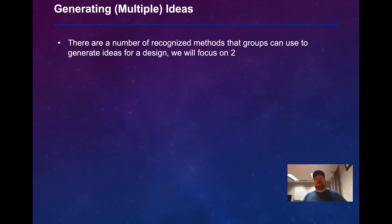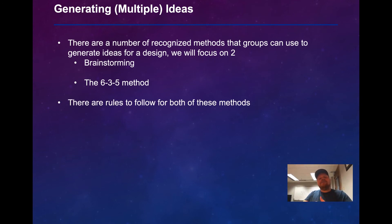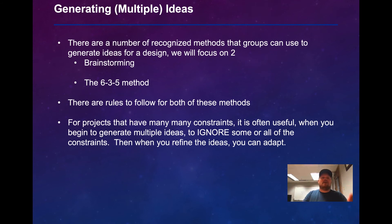The next part of the design process we'll talk about today is generating ideas. There are a number of recognized methods for groups to generate ideas for a design — we're going to focus on exactly two: brainstorming and the 6-3-5 method. In each of these methods, there are specific rules to follow. For projects with many constraints, it's often useful when you begin to ignore some or all of those constraints to give you more options, then adapt based on constraints when you refine the ideas.